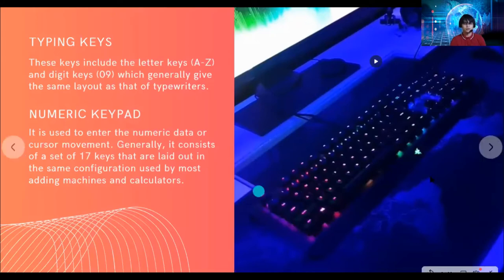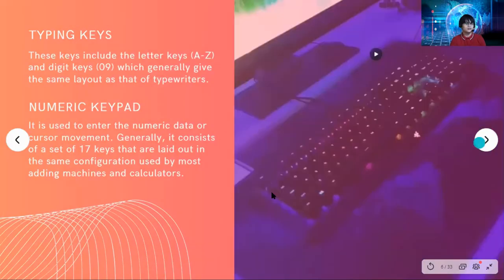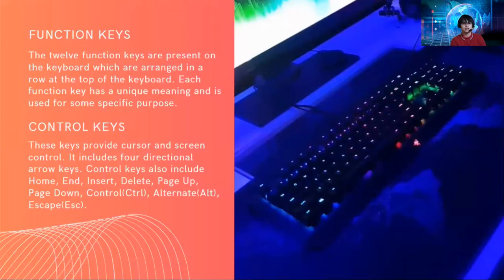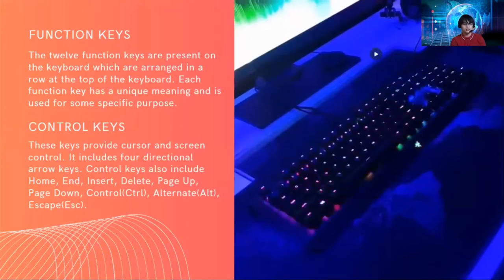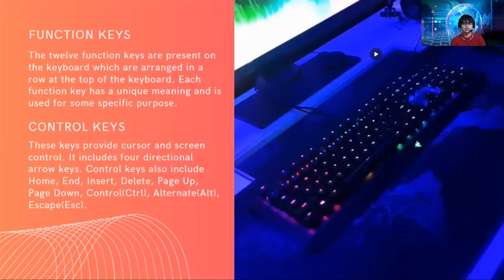The keyboard also has function keys and control keys. The 12 function keys are present on the keyboard, arranged in a row at the top of the keyboard. Each function key has a unique meaning and is used for some specific purpose. The control keys provide cursor and screen control — they include four directional arrow keys, and also Home, End, Insert, Delete, Page Up, Page Down, Control, Alternate, and Escape.